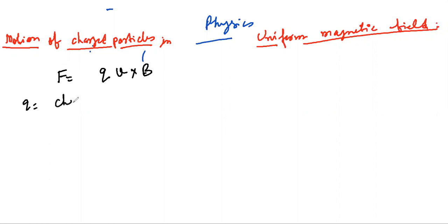Where Q is charge, V is the velocity, and B is the magnetic field.